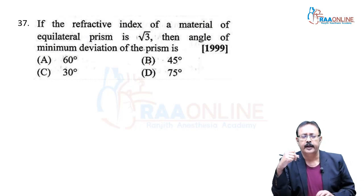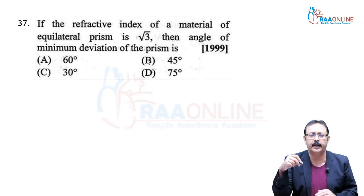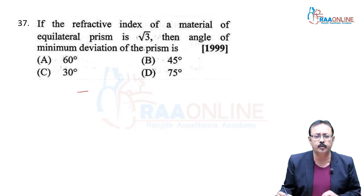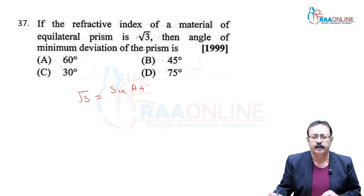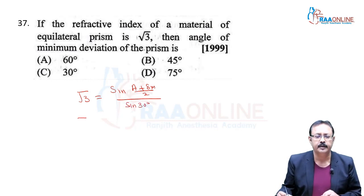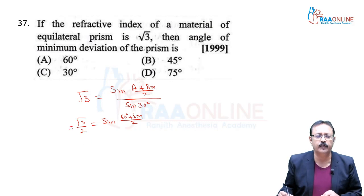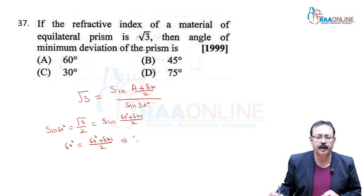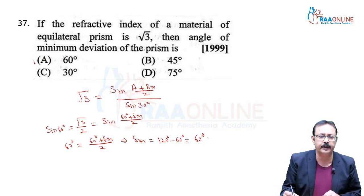Problem 37, from 1999. If the refractive index of an equilateral prism is √3, find the angle of minimum deviation. Using μ = sin((A+δM)/2) / sin(A/2) = sin((60+δM)/2) / sin(30°). √3/2 = sin((60+δM)/2), which equals sin(60°). So (60+δM)/2 = 60°, giving δM = 60°. We go with option A, 37A.